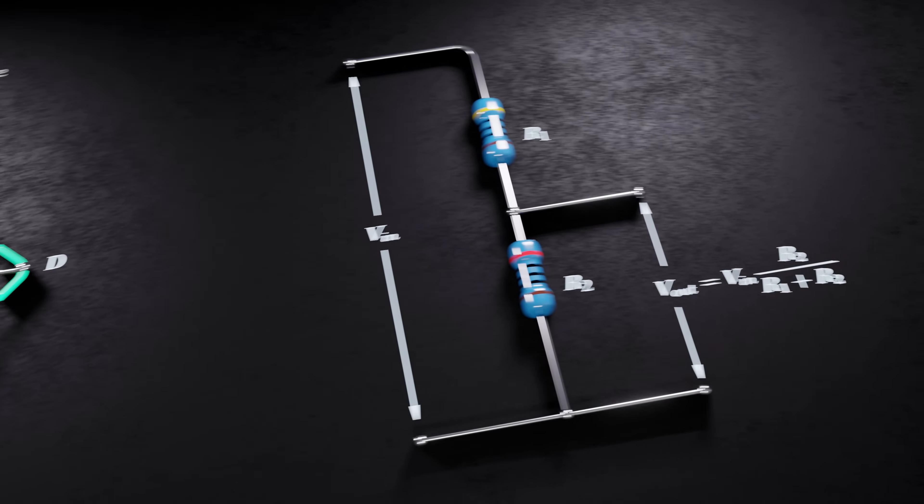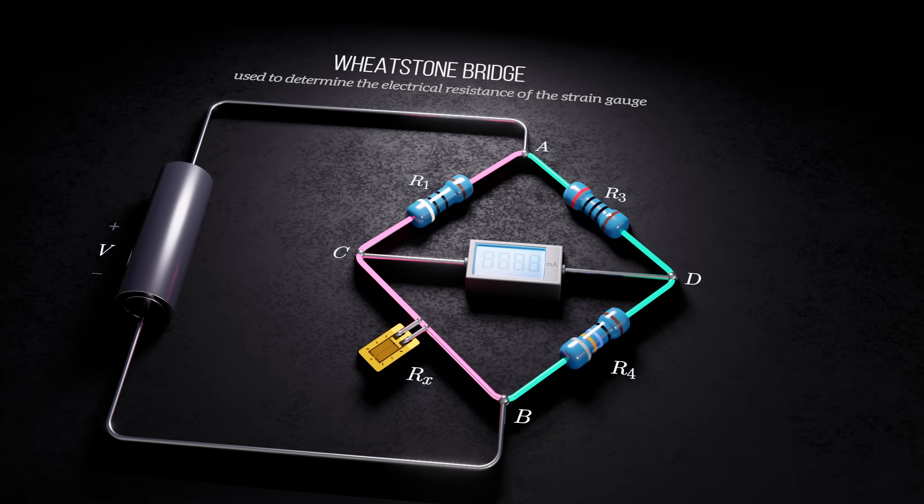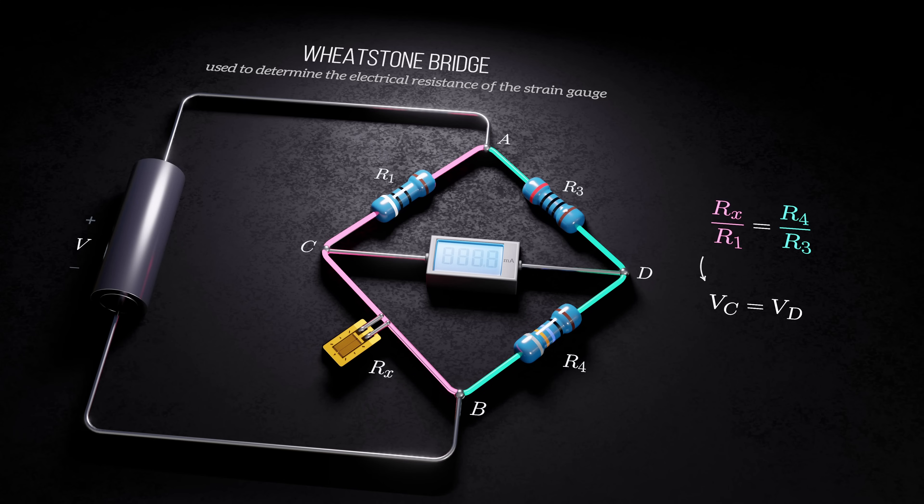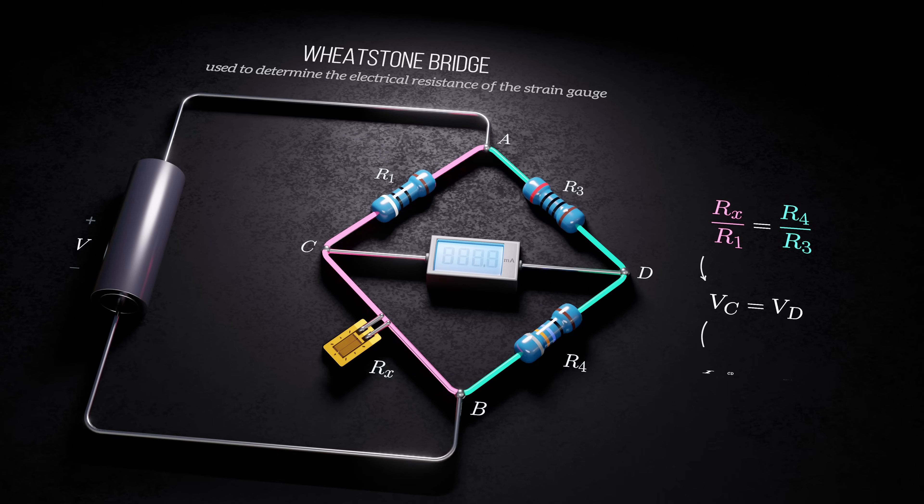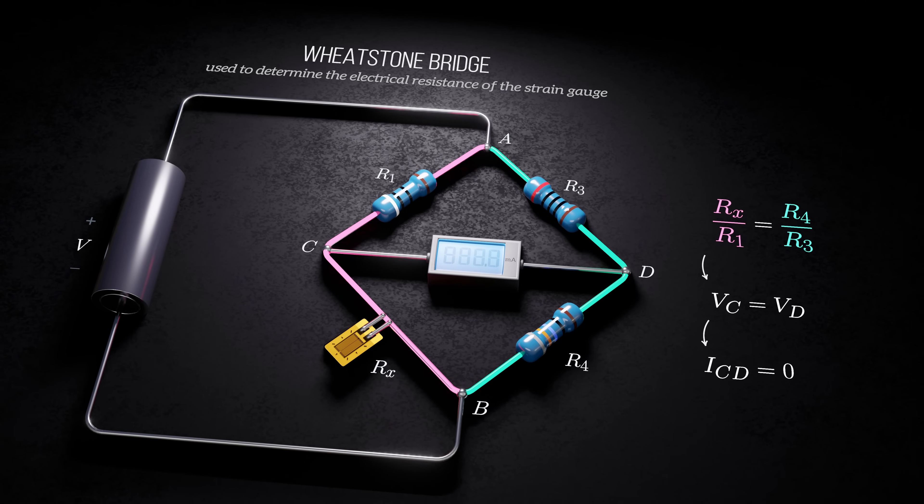Something interesting happens with the wheatstone bridge when the ratios of the resistances on both branches are equal. The voltages at points C and D are the same, so there is no current flowing through the segment. When this happens, the bridge is said to be balanced.